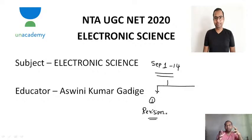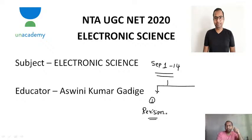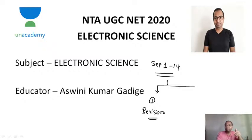The first course is a revision course where the complete 10 units of UGSNET Electronic Science will be revised from the 1st to 14th. In each session, one unit will be picked up, covering the important formulas, important topics, and the most repeated topics from the past five to six years of the UGSNET exam. All these points will be summarized, and a class PDF will also be available for each unit.